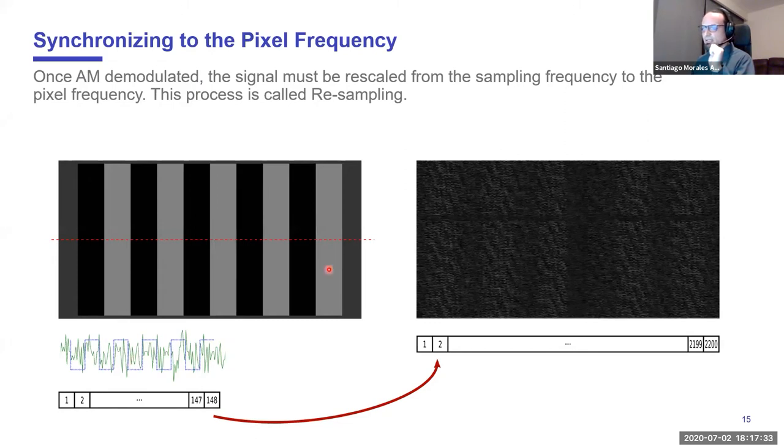Once we have our set of amplitudes, we have to go to a process called resampling. For example, imagine we have this reference image. If we are sampling at 20 megahertz and you do the math, you will reach the point that per line we are obtaining 148 samples. But in reality, we know that one line is composed of 2200 pixels. So how do we convert this buffer into this buffer? It's a matter of resampling where we have to fill the data in this buffer, maybe repeating the first sample 15 times, the second sample 14 times. This is done very carefully. If you don't do this very carefully in a synchronized way, you will not be able to obtain your video frames.